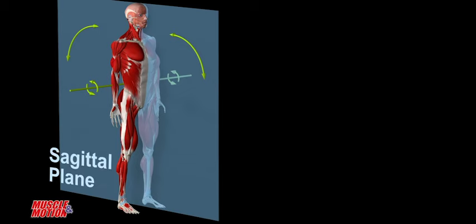The sagittal plane passes through the body from front to back, dividing the body into left and right parts. Sagittal plane movements are forward and backward movements.